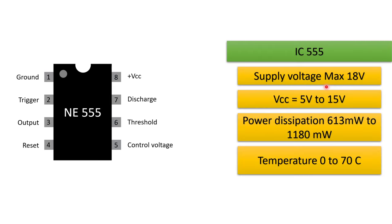The maximum allowable supply is 18V and VCC ranges between 5 to 15V. The power dissipation capacity for SOIC and PDIP packages varies from 613mW to 1180mW. This IC can operate in a temperature range from 0°C to 70°C.